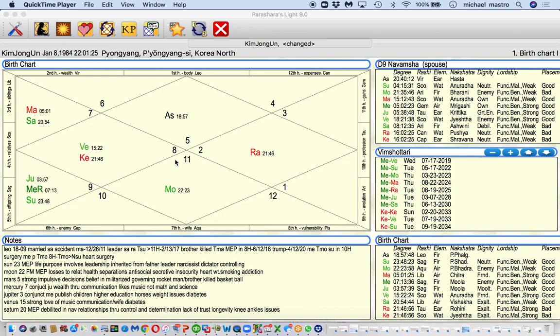Now there's many birth dates and no time of birth, so we had to do a rectification, but this chart seems to work pretty well. Born in North Korea. If you look to the eastern horizon when he was born, you have Leo rising at 18 degrees, almost 19 degrees. That becomes the most effective point of every house.